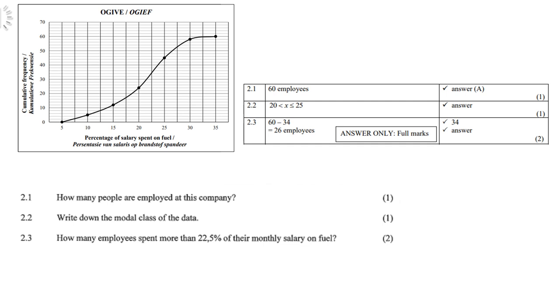And 2.3, how many employees spend more than 22.5% of the salary on fuel? So 60 is the maximum. And if you go on your horizontal axis and go to 22.5, move up and across and you'll get 34. So therefore 60 minus 34 gives you 26 employees.